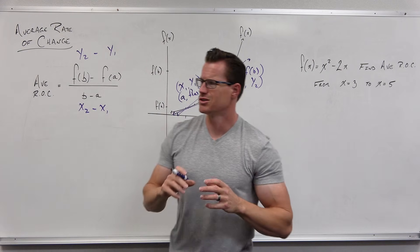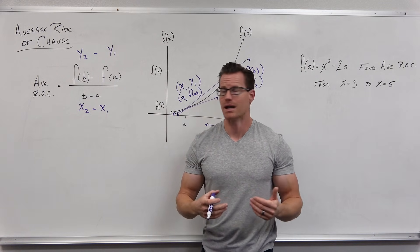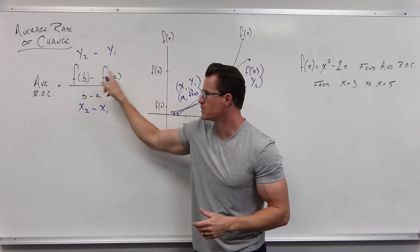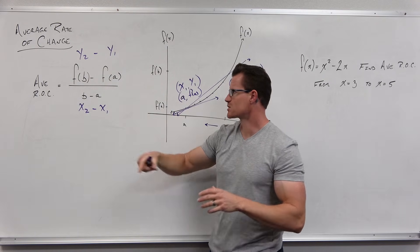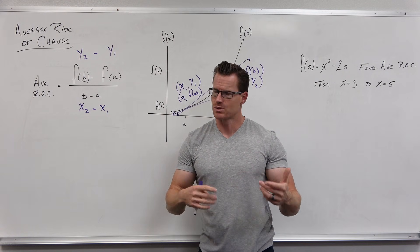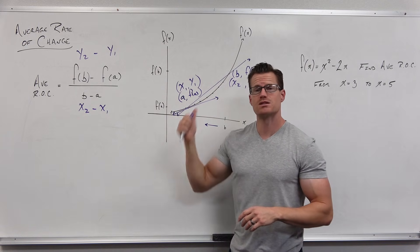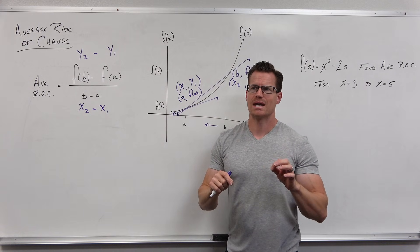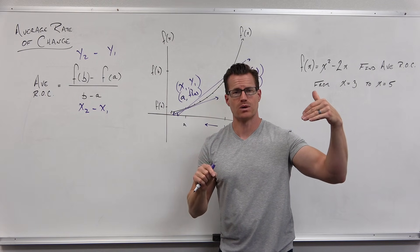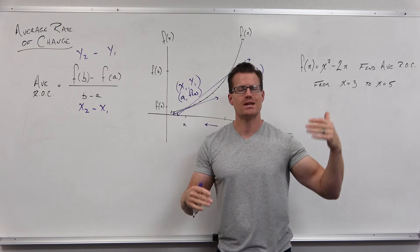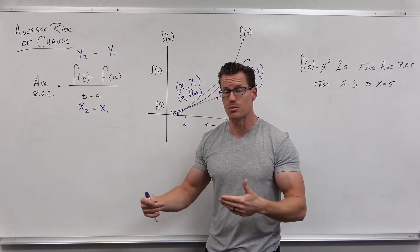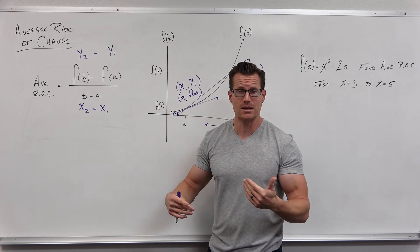The average rate of change just gives you a slope formula — it's just a different way to look at it. Output minus output over input minus input, one point, another point. Y2 minus y1, output subtracted, over x2 minus x1, input subtracted. It's just slope. The reason we have the term average rate of change instead of slope is because we're saying I can't find the slope of a curve — we'll do that in calculus — but I'm just finding the rate of change between two points on that curve on average. Essentially, you're just finding the slope of a secant line, and the slope formula is practically the same.